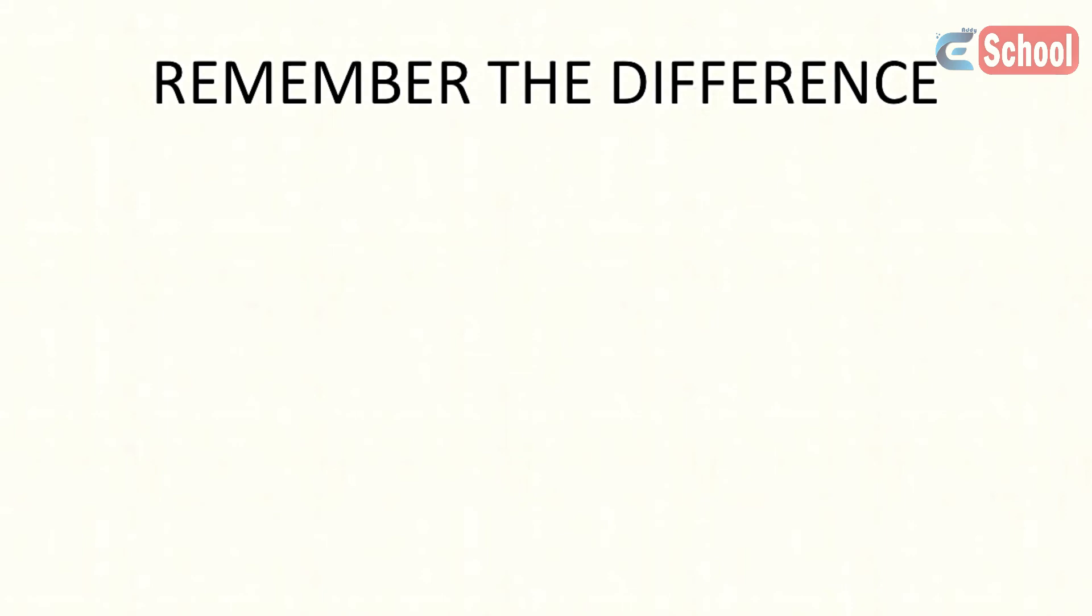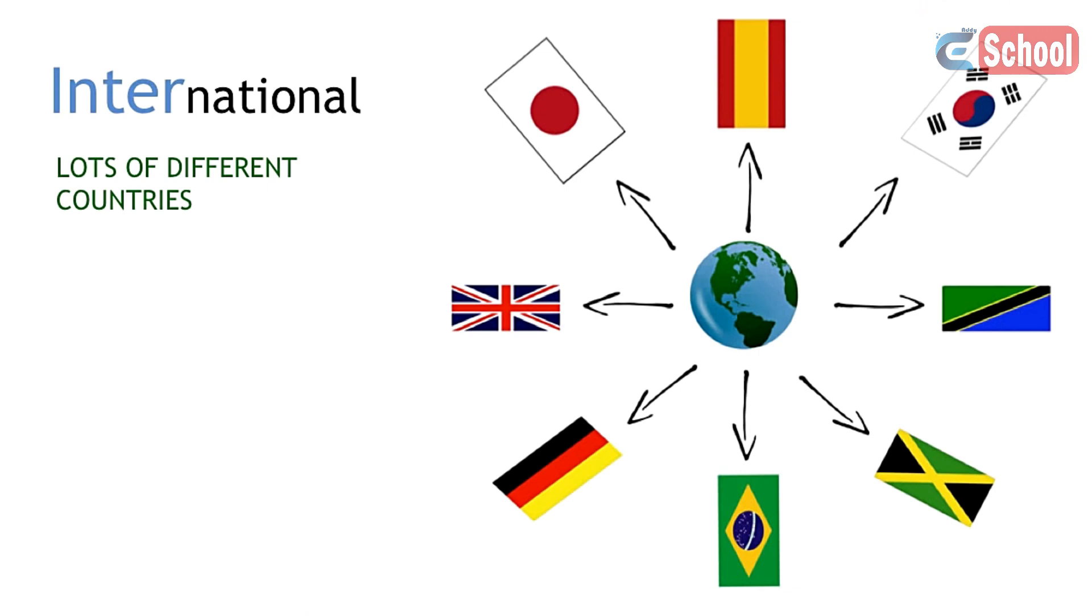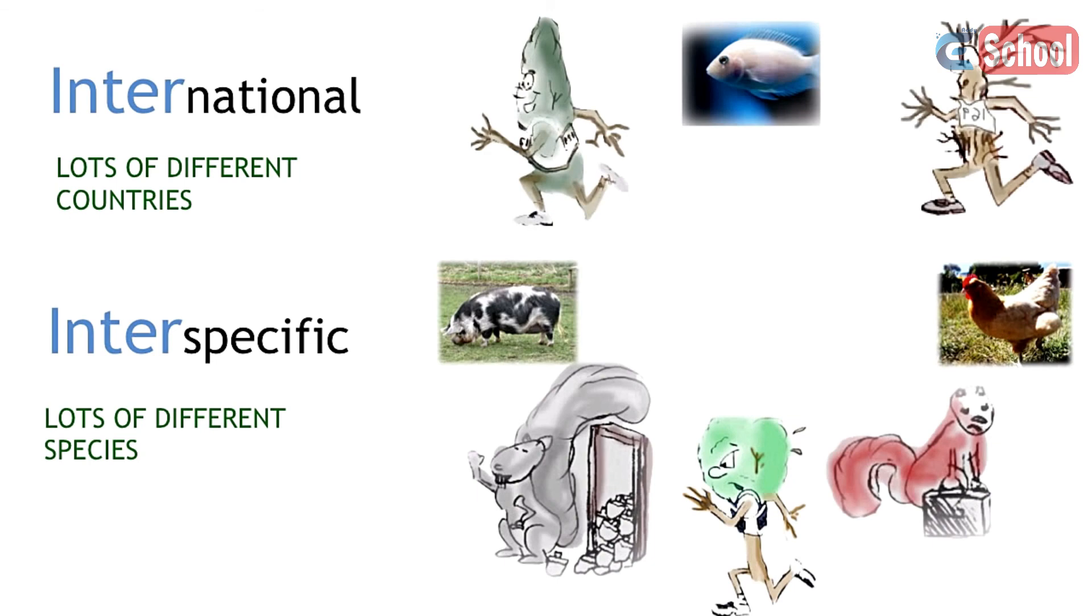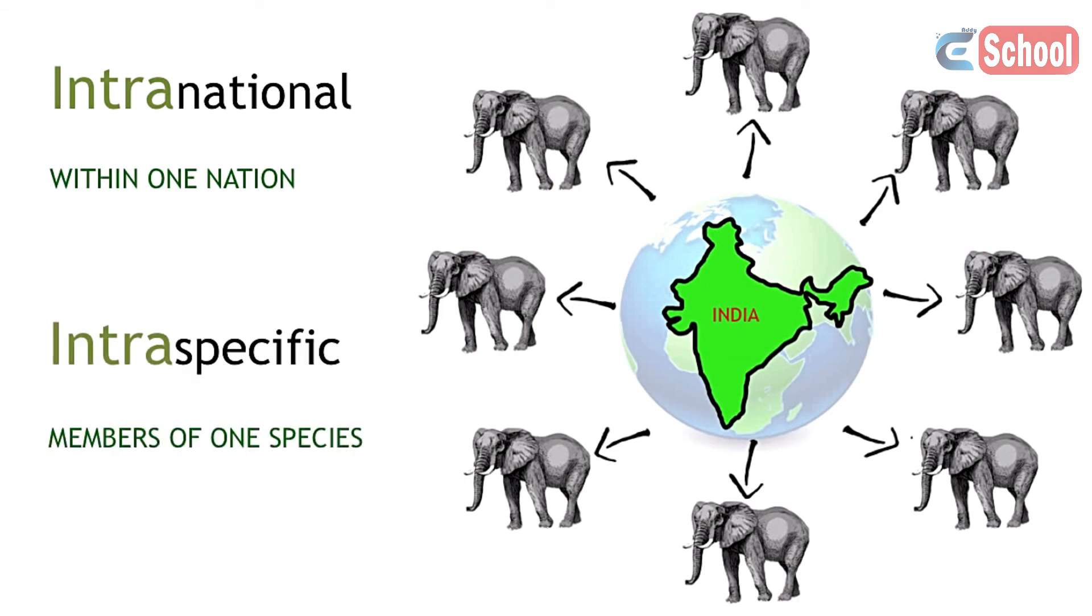To remember the difference between interspecific and intraspecific interactions, remember that international means between lots of different countries. So interspecific interactions are between lots of different species. Intranational would be within one nation. Intraspecific interactions involve members of one species.